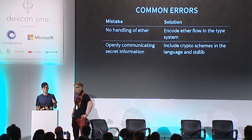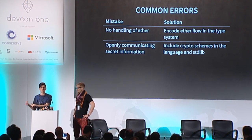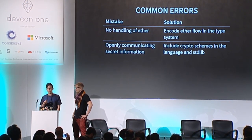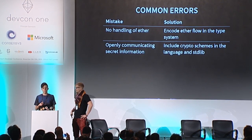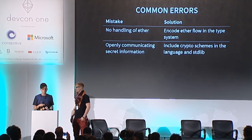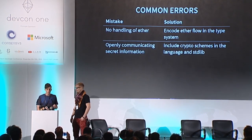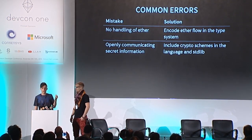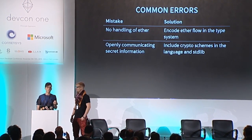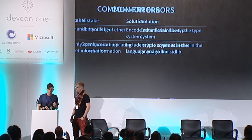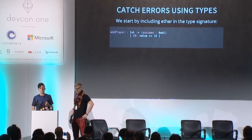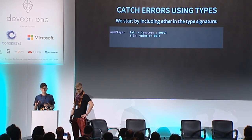Just a quick recap: there are two classes of error that are very common for developers getting into smart contract development. What we're trying to do is use an expressive type system to help identify and solve these, and to do this we are including both ether flow and cryptography directly in the type system.